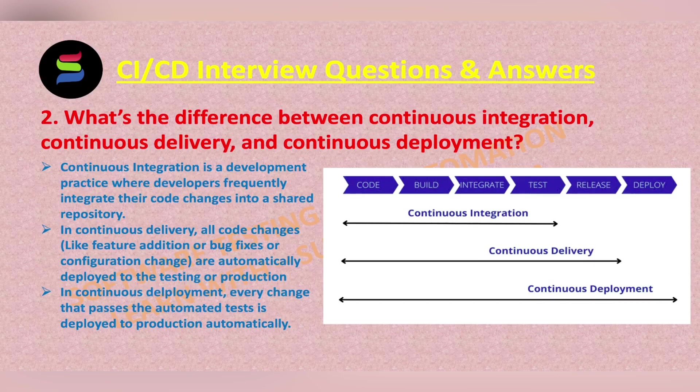Then continuous delivery — in continuous delivery, all code changes like feature additions, bug fixes, or configuration-related changes are automatically deployed to the testing or production environment after the completion of the build process. By automating the delivery of new code to users, continuous delivery ensures a safe, quick, sustainable process. Continuous delivery ensures that deployments are both predictable and consistently scheduled.